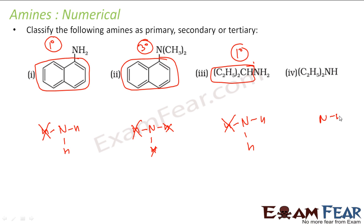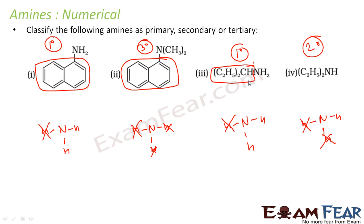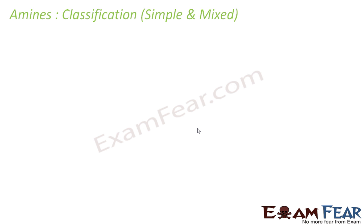In another compound, there are two C2H5 groups attached to nitrogen, meaning two hydrogens have been replaced and one hydrogen remains intact. Since two hydrogens are replaced, this is a second-degree (secondary) amine. In the earlier compound with two CH3 groups attached to nitrogen, both hydrogens are replaced — that gives us a third-degree (tertiary) amine. So: one hydrogen replaced = primary, two replaced = secondary, three replaced = tertiary.